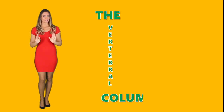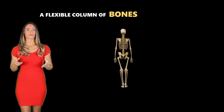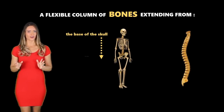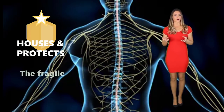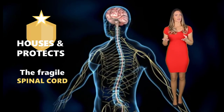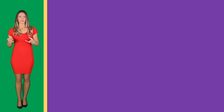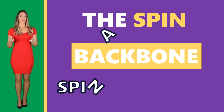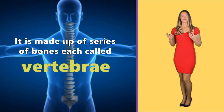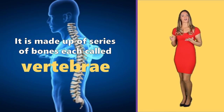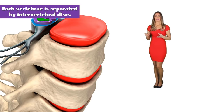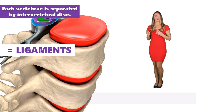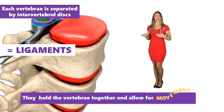The axial skeleton — the vertebral column. The vertebral column is a flexible column of bones extending from the base of the skull to the pelvis. It is the vertebral column that houses and protects the fragile spinal cord. The vertebral column is also called the spine, the backbone, or the spinal column. It is made up of a series of bones, each called a vertebrae, separated by intervertebral discs, which act as ligaments that hold the vertebrae together and allow for movement.